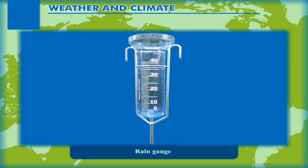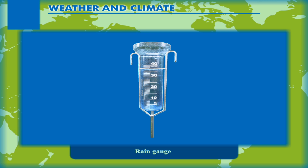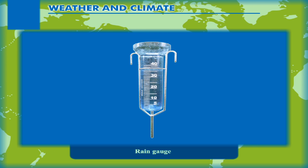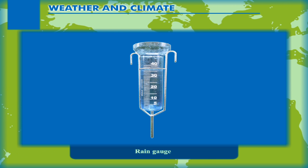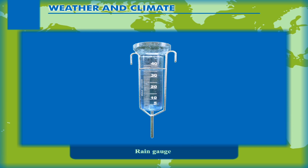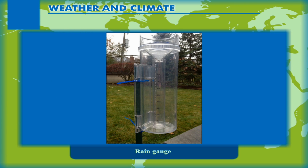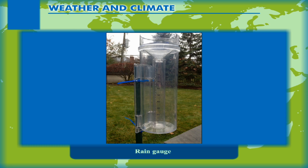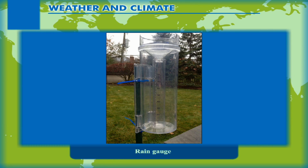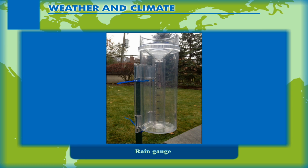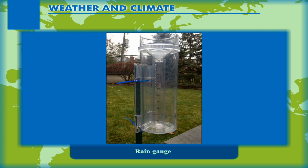Several precautions need to be taken so that the accuracy of measurement is maintained. The rain gauge is kept away from any obstruction like buildings or trees. Care is taken to prevent evaporation of water from the instrument. The water is very carefully transferred from the rain gauge to the measuring cylinder without any spilling.